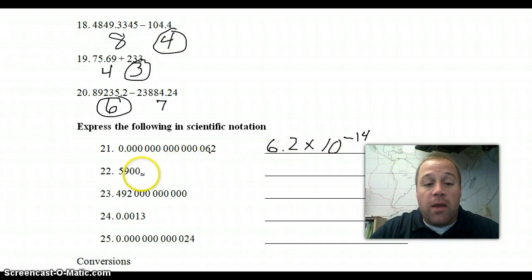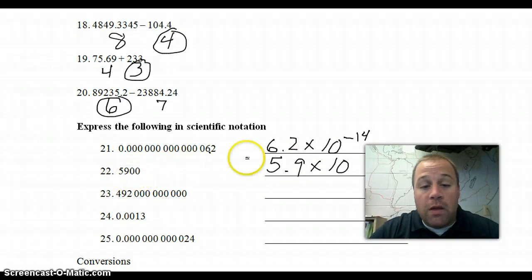Here, the decimal point would be here. Move it over to make 5.9 as our number between 1 and 9.9. So, 5.9 times 10. In this case, we moved the decimal point to the left. So, it is going to be positive. So, we moved it 1, 2, 3 spots. So, it is just going to be to the positive third.